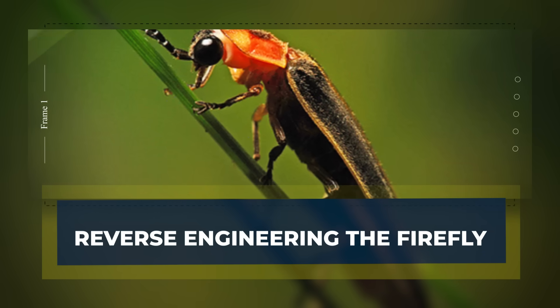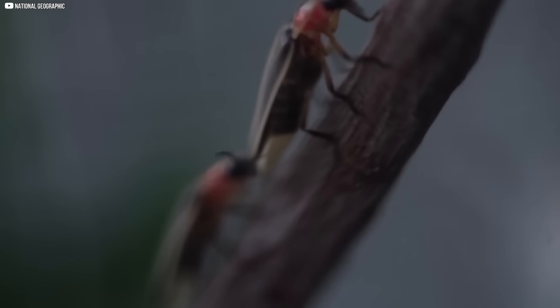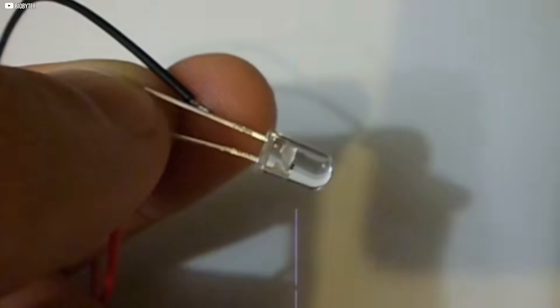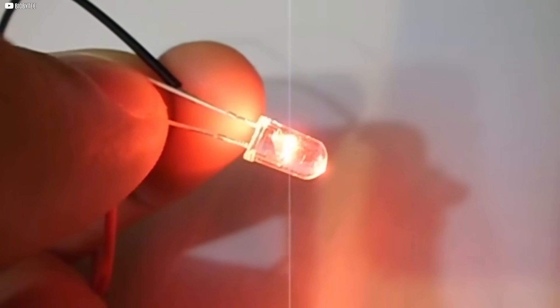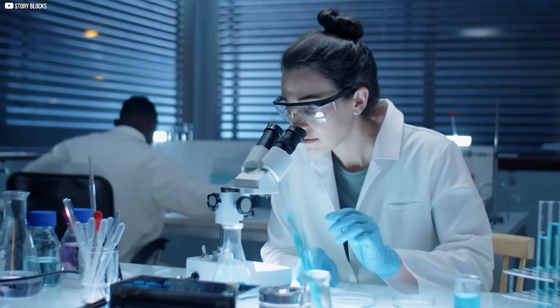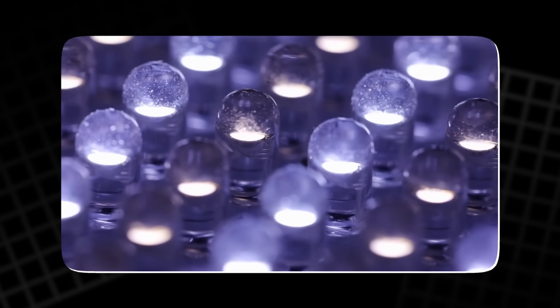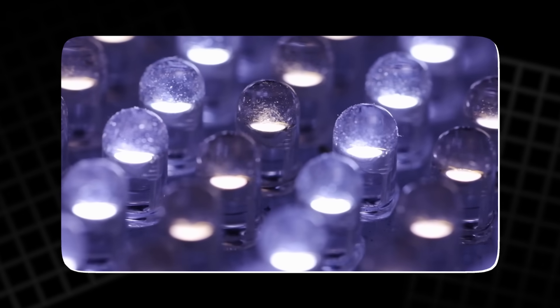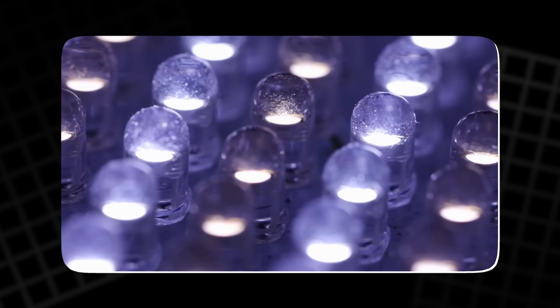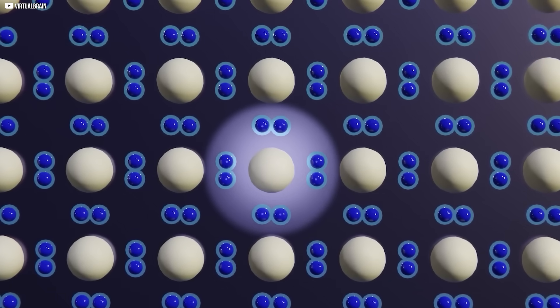Reverse engineering the firefly. Once scientists saw how fireflies escaped light loss, they tried to replicate it. The answer wasn't new materials, just new shapes. Researchers created surfaces that mimic firefly textures. One method added a jagged overlay to existing LEDs. It wasn't cosmetic. These ridges scattered trapped photons outward.